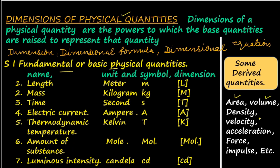All other quantities like area, volume, density, velocity, acceleration etc. are derived quantities because they are derived from the basic fundamental quantities.